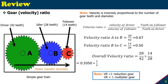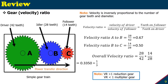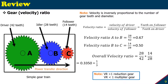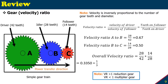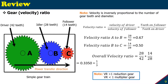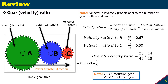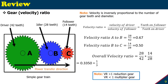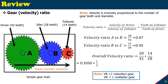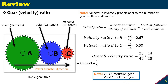Let's find the overall velocity ratio for this simple gear train arrangement. For the velocity ratio from A to B, it is the teeth on the follower over the teeth on the driver. The follower has 28 teeth and the driver has 42 teeth, giving a ratio of 0.67.